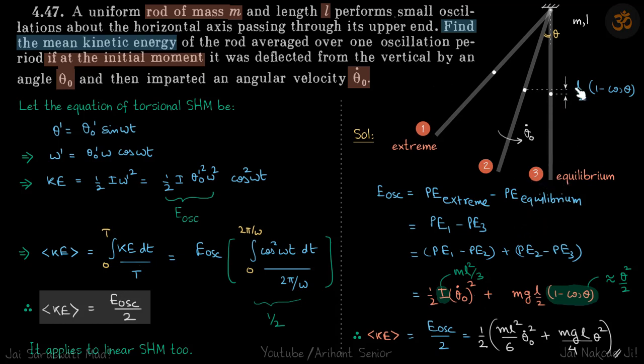And PE₂ - PE₃, you can see from here, that is mg times this height. And what is this height? This is L/2 - L/2 cos θ, or L/2(1 - cos θ). So that is this.